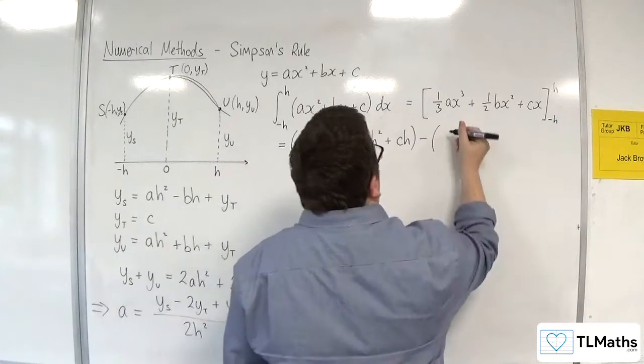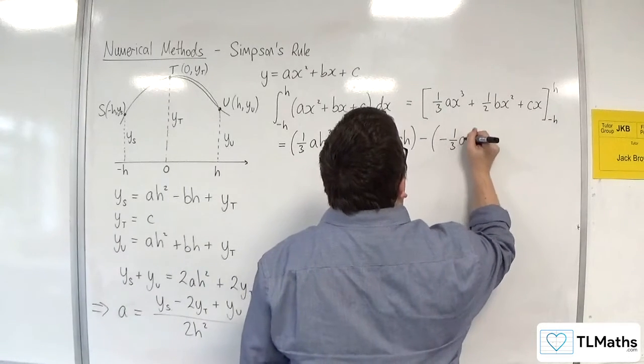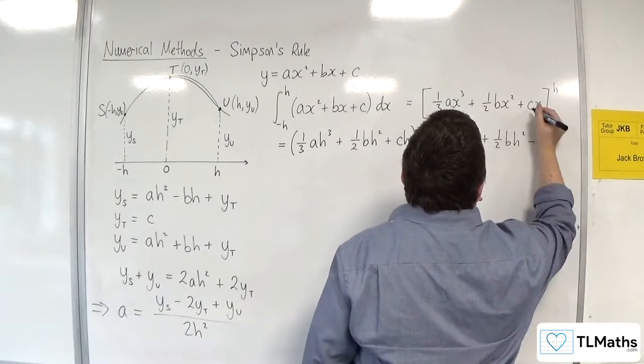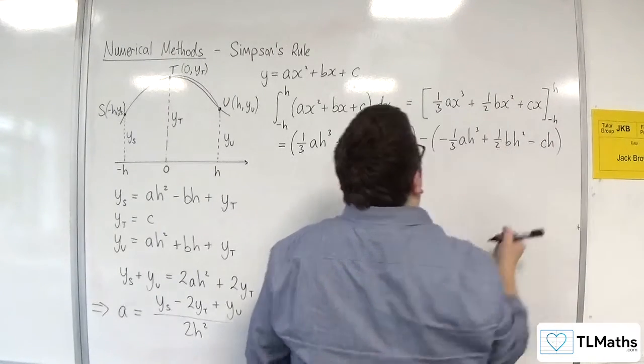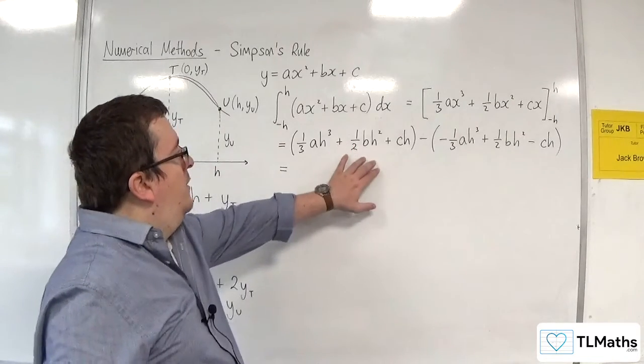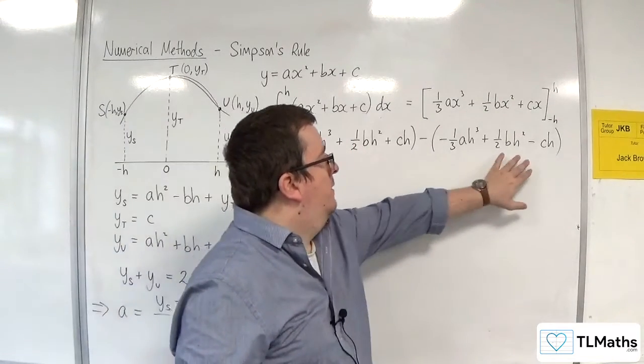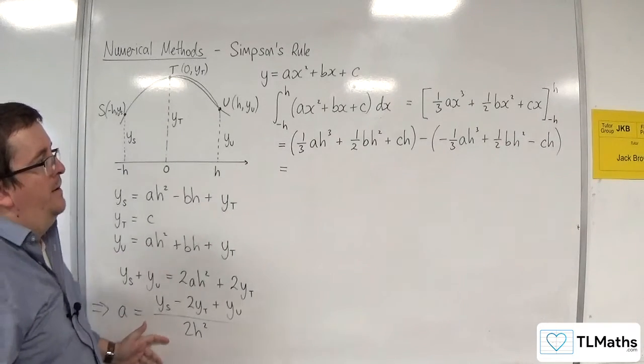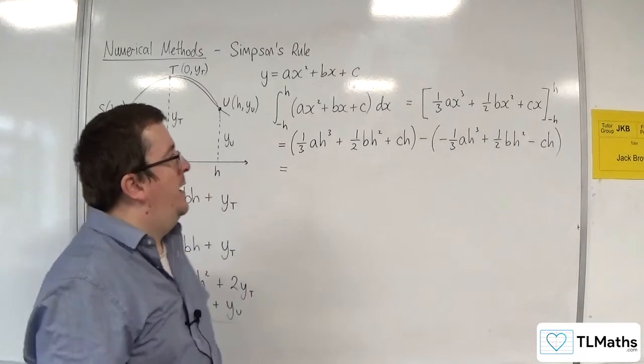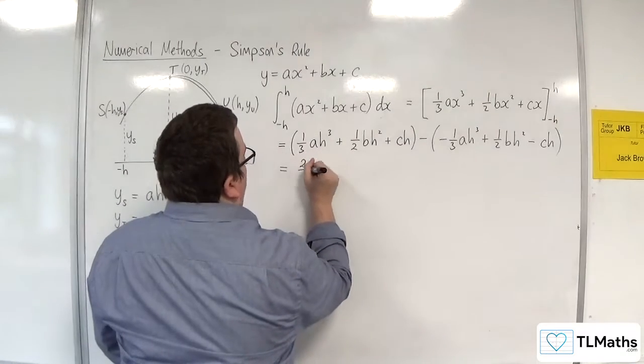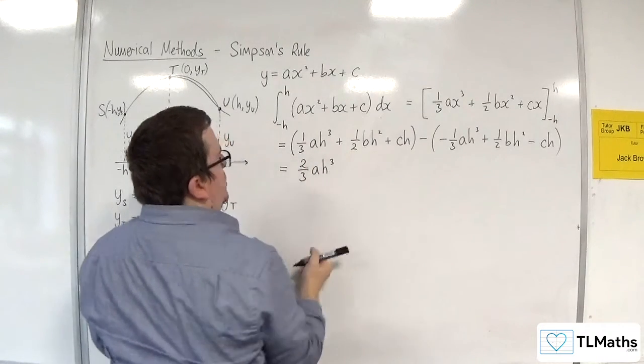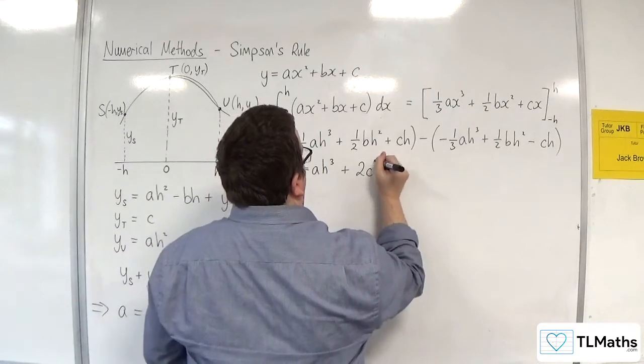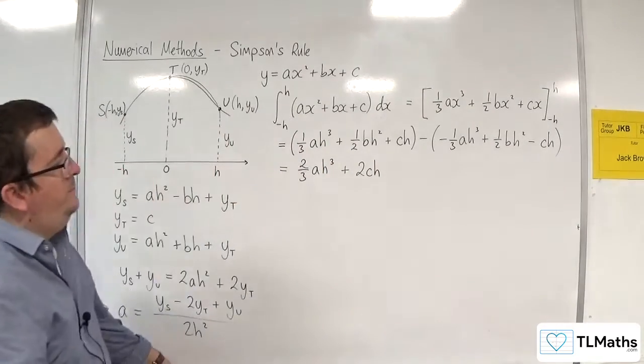Then take away substituting the minus h, minus one third ah cubed plus one half bh squared take away ch. Now, the half bh squared take away the half bh squared, that's gone. And that's a reason why I didn't try to work out b here. Because I'm going to get that cancellation here. So I'm going to be left with two thirds ah cubed and 2 lots of ch.